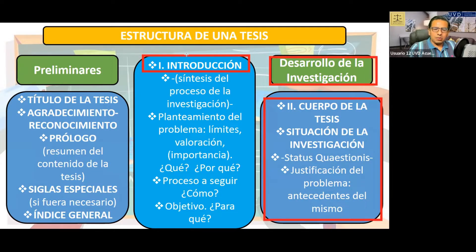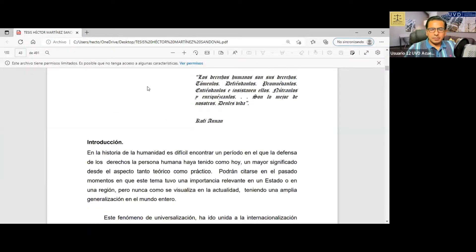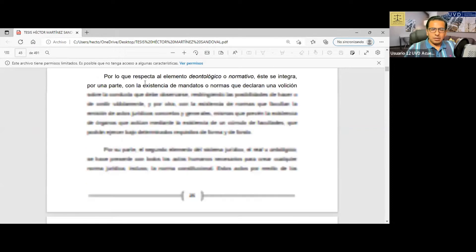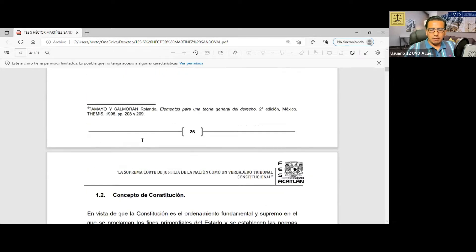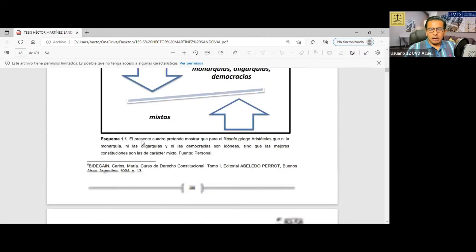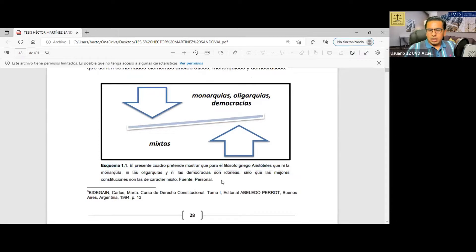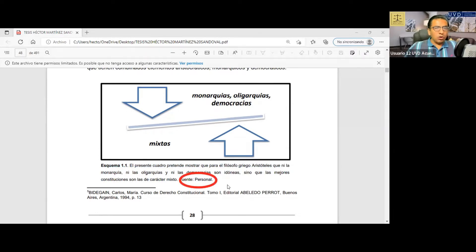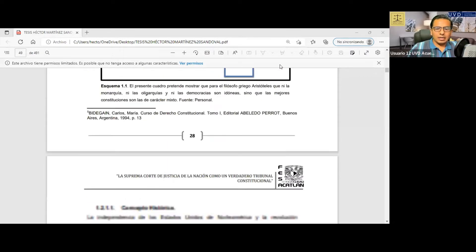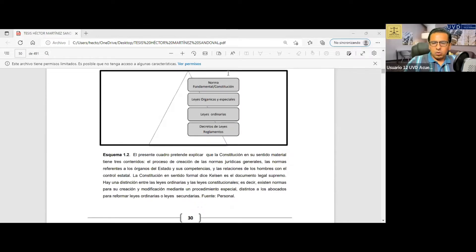¿Qué es lo que empezamos a atacar dentro de esta tesis de grado? Ahí empezamos a desarrollar, colocando las notas al pie de página correspondientes y los esquemas. También señalo el objeto de ese esquema, qué es lo que está representando. En este caso señalo que la fuente es propia. Si el esquema lo tomara de otro autor, entonces tendría que poner la referencia como nota al pie de página para indicar el autor del cual tomo esa referencia. Todos los esquemas tratan de explicar un contenido en particular.